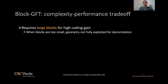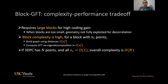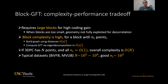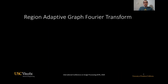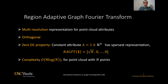This transform, to achieve good performance, requires large blocks. This is because when the blocks are too small, the geometry cannot be fully exploited. On the other hand, the complexity of this transform increases with the size of the blocks, because the complexity of graph construction and GFT computation increases as well. Even though it has these complexity issues, the overall complexity of the transform is still linear in the number of points. However, for typical datasets, to achieve good coding performance, we need block sizes in the order of hundreds. The original RAGFT provides some multiresolution representation for the point cloud attributes. It is also orthogonal, has the zero-DC property, which means that if the input signal is a constant attribute, then the RAGFT will provide a sparse representation. And also, the complexity is almost linear in the size of the point cloud.